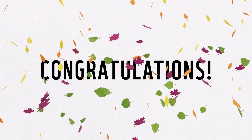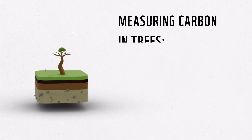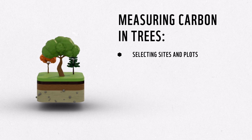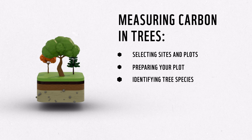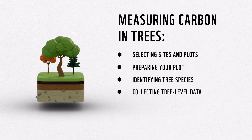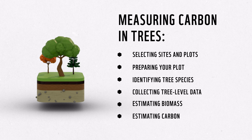Congratulations! You now know how to measure carbon in trees! In this video, you reviewed the steps for selecting a study area, site, and plots; preparing your plot for measuring; identifying tree species in your plot; collecting data for each tree in your plot; using tree data to estimate above-ground and below-ground biomass; and using tree data to estimate total carbon stocks for an area. For more information, please consult the accompanying guidelines for trees and refer back to this video anytime. Happy measuring!